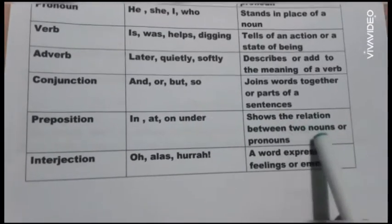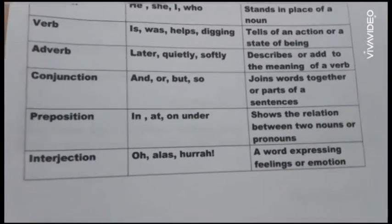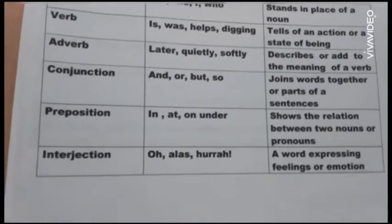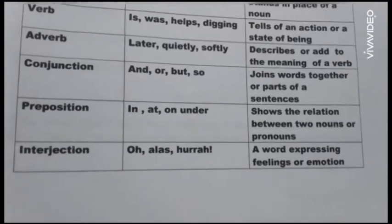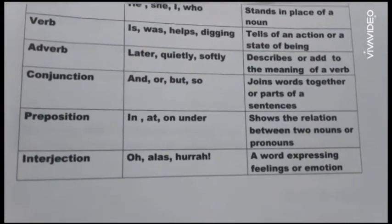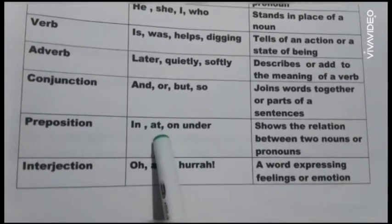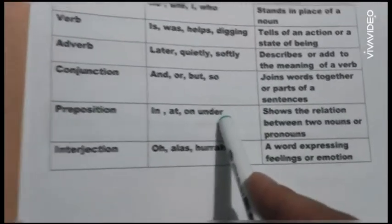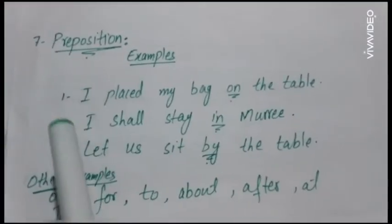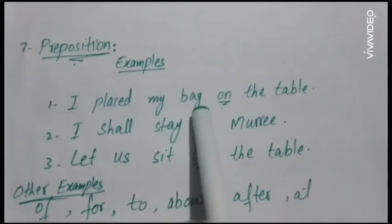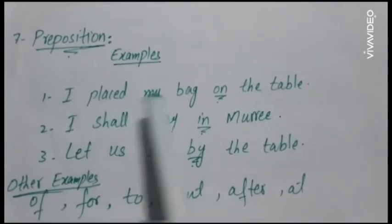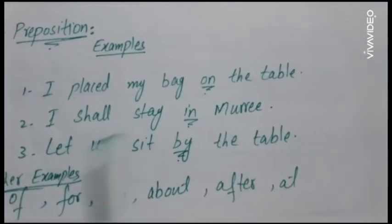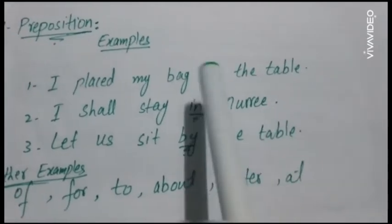Preposition shows the relation between two nouns and pronouns. Preposition is used with a noun or pronoun, because it is related to another thing. Like: in, at, on, under. Now let's look at these sentences: I placed my bag on the table. I shall stay in Marie. Let us sit by the table.